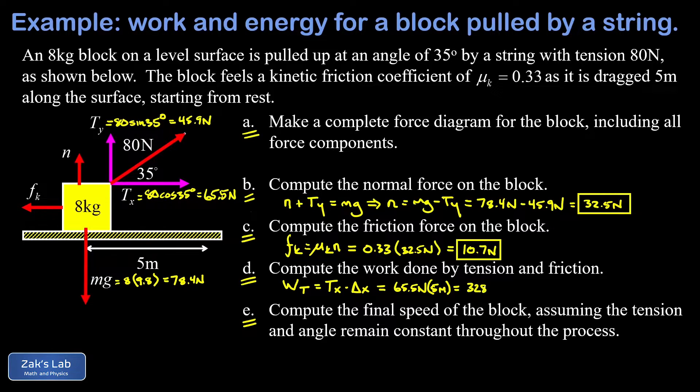Now when we're looking at the work done by friction, we see that the friction force is already anti-parallel to the displacement vector. The displacement vector points to the right, friction force points to the left, and this is going to give us a minus sign. So we end up with a negative Fk times our delta x. That's negative 10.7 newtons times five meters, and we get this negative work of 53.5 joules. There's friction doing what it usually does, which is to remove energy from the system.